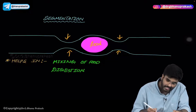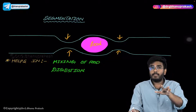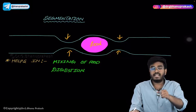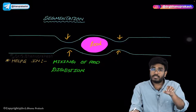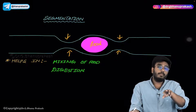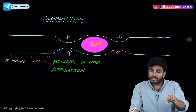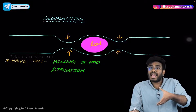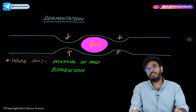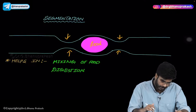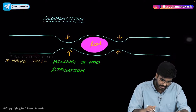Segmentation helps in mixing of food and digestion. In peristalsis, the proximal segment contracts and the distal segment relaxes to propel food forward. In segmentation, both the proximal and distal segments contract, trapping food for digestion. Segmentation is the major GI motility — don't forget.